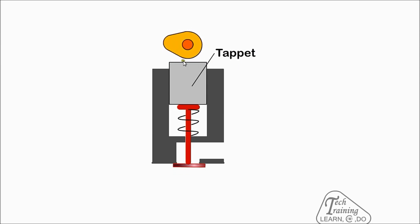To allow for expansion as the engine heats up, it is necessary to have a small gap between the tappet and cam to ensure the valve is fully closed. Note the area around the exhaust valve is the hottest part of the engine.